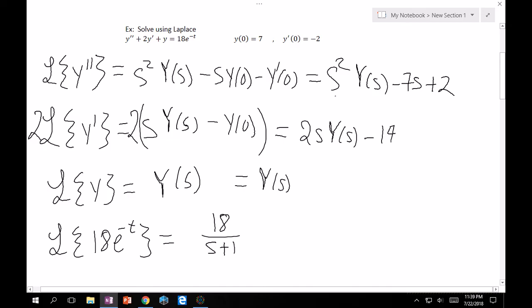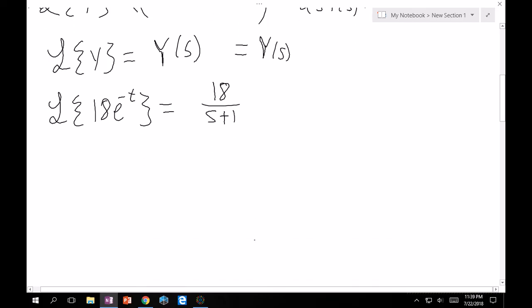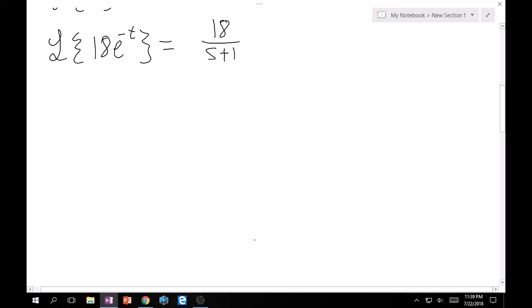Let's go ahead and take the Laplace of what's on the right-hand side, 18e minus t. Using your table, you should see that this is just 18 over s plus 1. And good.